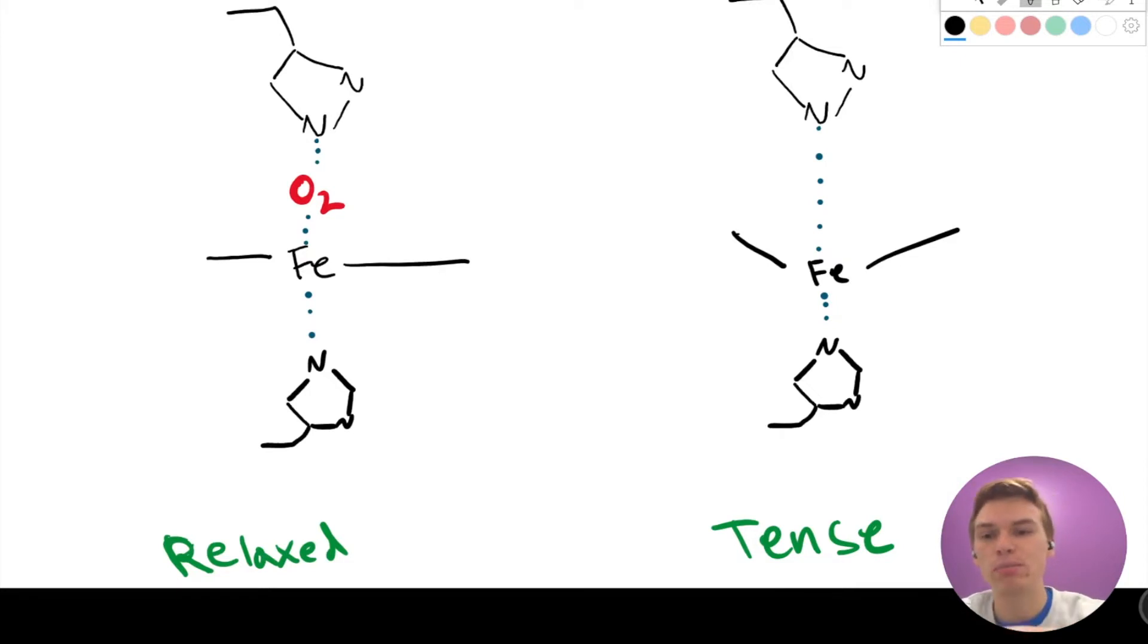And when oxygen is bound, as we can see here in the left, we're in what we call the relaxed state. The oxygen is able to pull the iron into the same plane as everything. But when the oxygen is gone, this distal histidine is further away, so it's what we call the tense state. You can think of as pulling a bow and arrow makes this nice triangle shape, just like in the tense state.